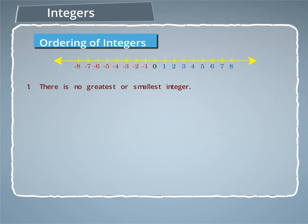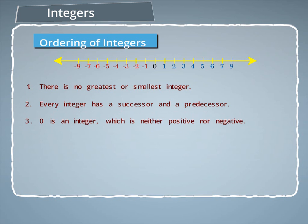1. There is no greatest or smallest integer. 2. Every integer has a successor and a predecessor. 3. 0 is an integer, which is neither positive nor negative.